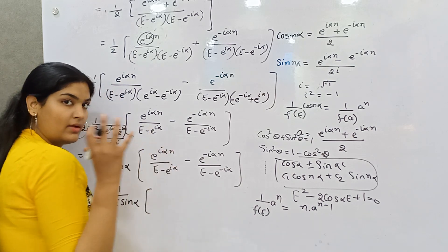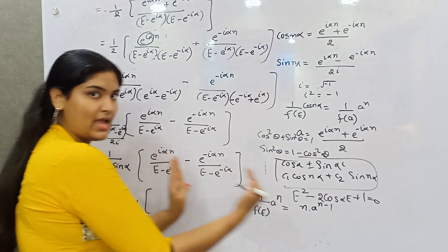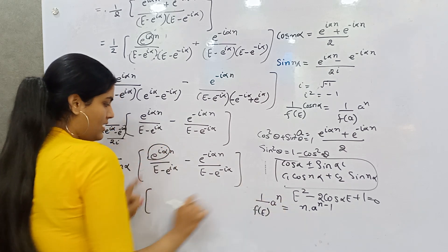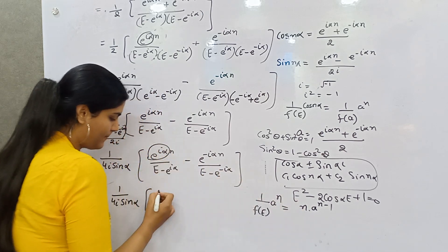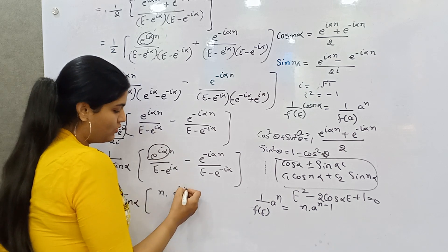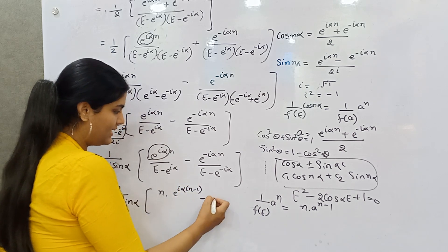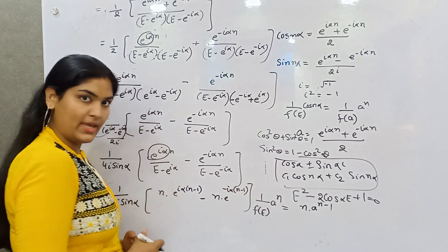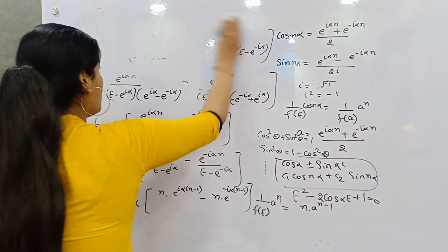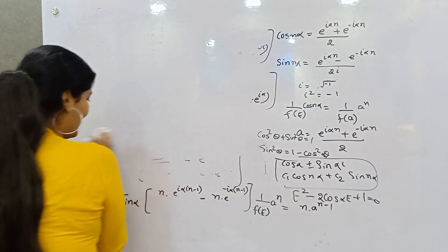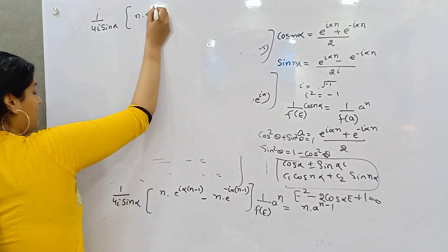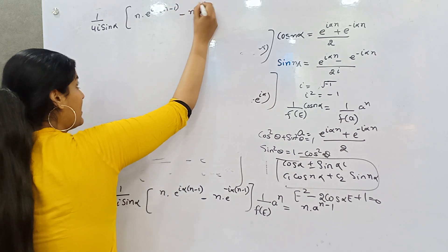Applying the analogy: compare the equation structure — this is your f(E) and this is your A^N. So the result uses N·A^(N-1). You get (1/4i·sinα) · N · [e^(iα(N-1)) - e^(-iα(N-1))]. Taking N common and splitting again by 2i, this matches the formula for sin((N-1)α).